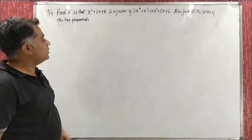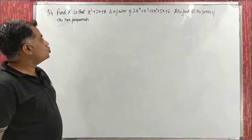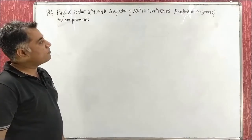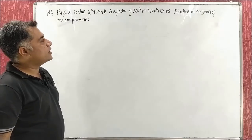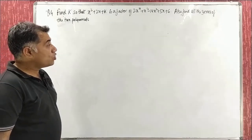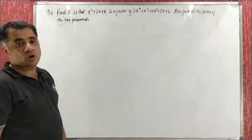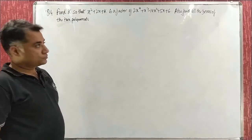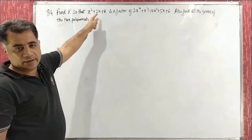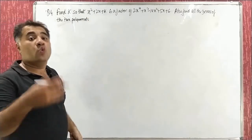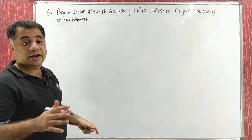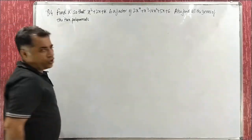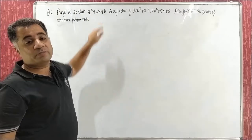Now question number 4: Find k so that x² + 2x + k is a factor of 2x⁴ + x³ − 14x² + 5x + 6. Also find all the zeros of the two polynomials. 'Two polynomials' means both of them are being discussed. Since x² + 2x + k is a factor, the remainder will be 0.